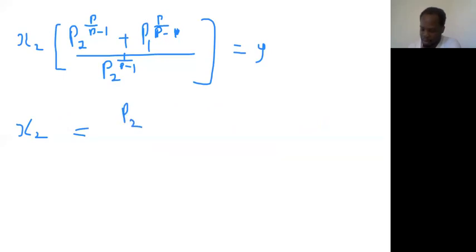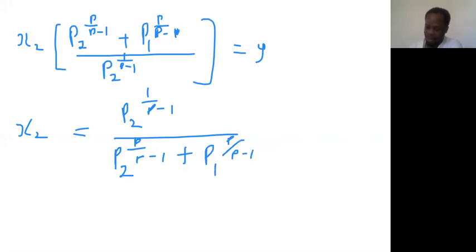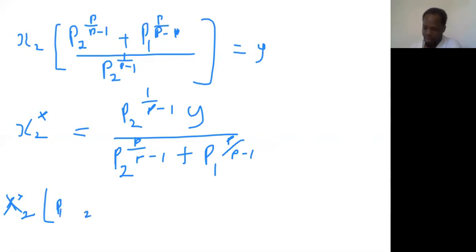Now, to find x2, I just divide: x2 equals p2 to the power of 1 over phi minus 1, all over p2 to the phi over phi minus 1 plus p1 to the phi over phi minus 1, multiplied by y. This x2 is what we call the Marshallian demand for x2, and if you check, it's a function of prices p1, p2, and income y. Anytime you solve the consumer problem and you have the optimal quantity as a function of all prices and income, we call it the Marshallian demand function or the ordinary demand function.